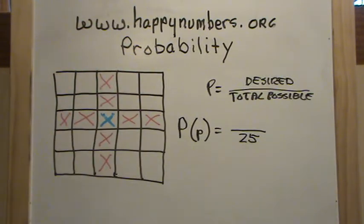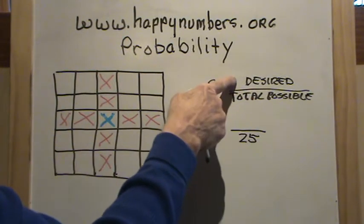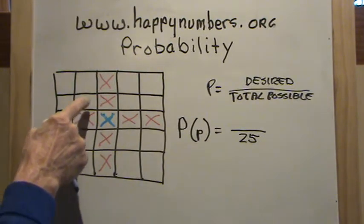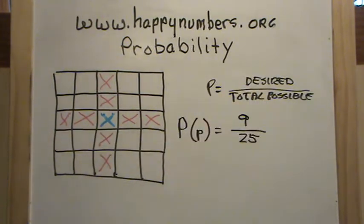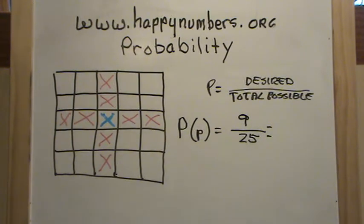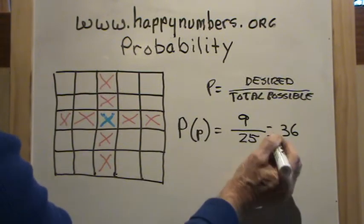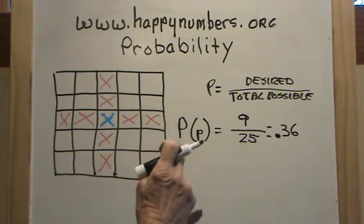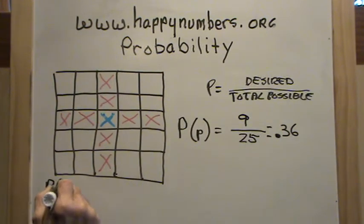We want to know the probability of winning a prize — either a big one or a little one. That's the desired outcome. How many desired outcomes are there? Counting the red and blue boxes, there are nine. So 25 divided into nine gives us the probability of winning a prize. I worked this out on a calculator: 25 divided into nine gives us 36 hundredths. So the probability of winning any prize is 0.36.